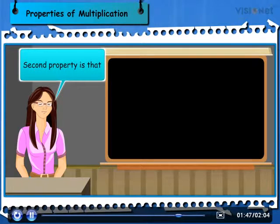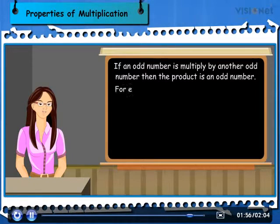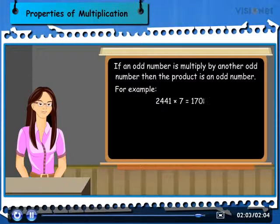Second property is that if an odd number is multiplied by another odd number, then the product is an odd number. For example, 2441 × 7 is equal to 17087.